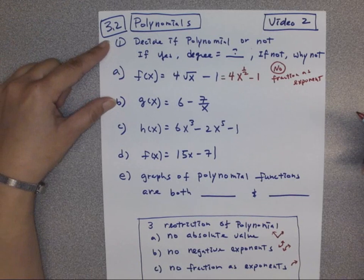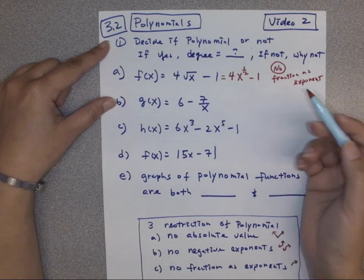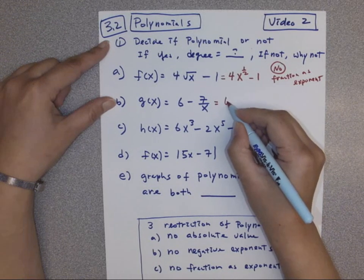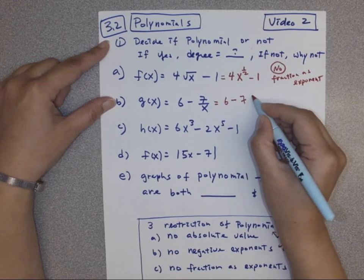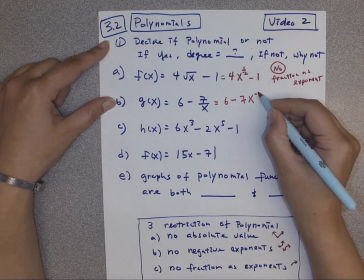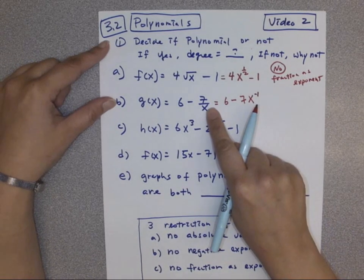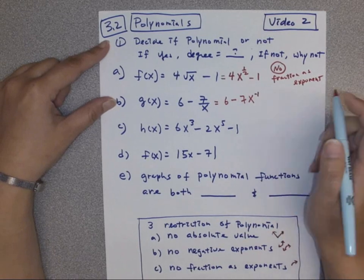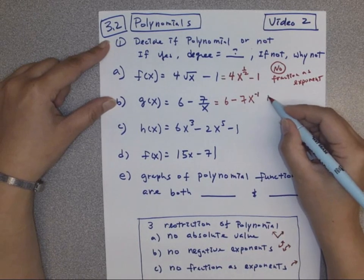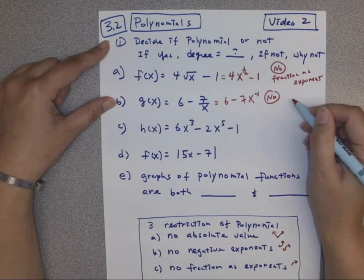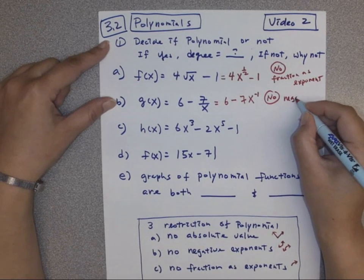You have to show the steps on the test to get full credit. The second one, we can rewrite that as 6 minus 7x raised to a negative exponent — x in the denominator means raised to negative one. Because it has negative exponents, this is not a polynomial. It has negative exponents.